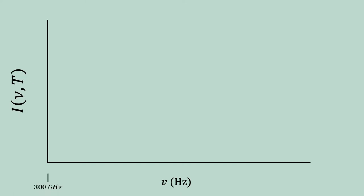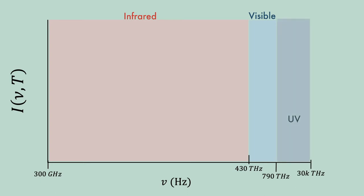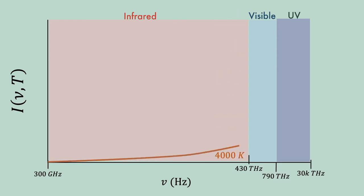From 300 GHz to 430 THz, this region is called the infrared region. From 430 THz to 790 THz, this region is called the visible region. From 790 THz to 30,000 THz, this region is called the ultraviolet region. When the radiator is fed with electromagnetic waves with frequency below the visible region cutoff, the intensity plot for a radiator with temperature of 4,000 K shows that as you increase the frequency, you increase the energy fed into the radiator and hence the intensity it emits increases as well.